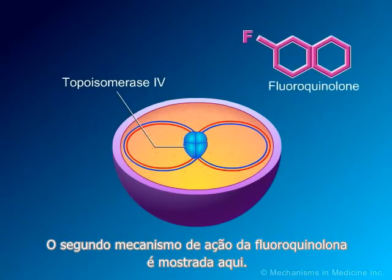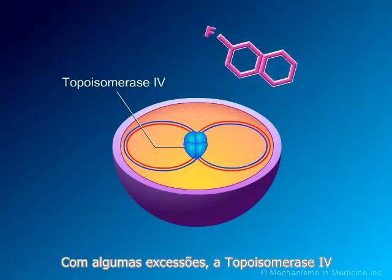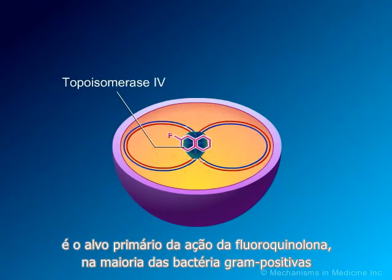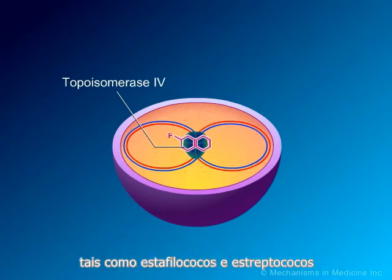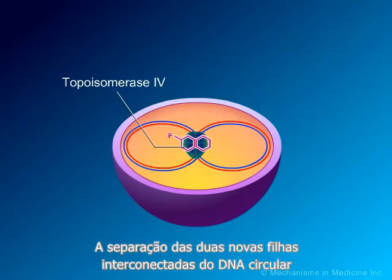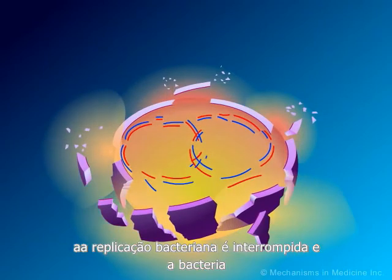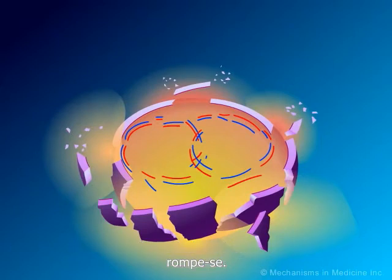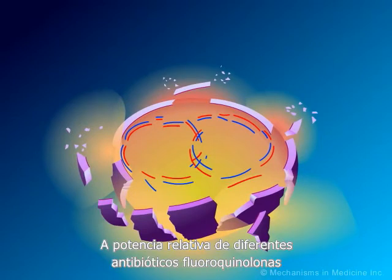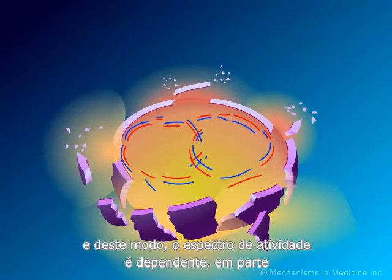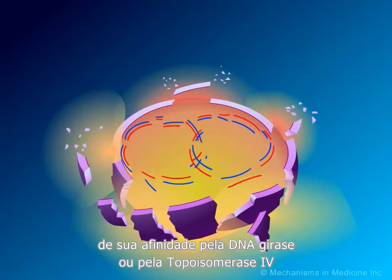A second mechanism of fluoroquinolone action is shown here. With some exceptions, topoisomerase 4 is the primary target of fluoroquinolone action in most gram-positive bacteria such as staphylococci and streptococci, with DNA gyrase being a secondary target. The separation of two new interlinked daughter strands of circular DNA is disrupted, and bacterial replication is disrupted causing the bacterium to break apart. The relative potency of different fluoroquinolone antibiotics, and thus their spectrum of activity, is dependent in part on their affinity for either DNA gyrase or topoisomerase 4, or both.